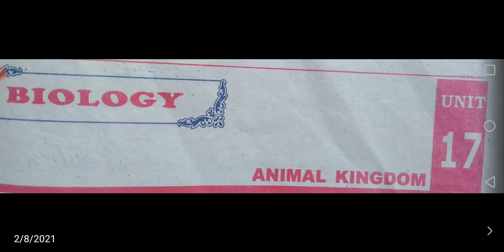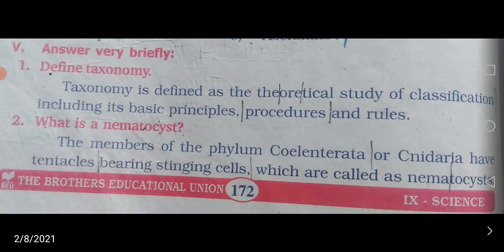Unit 17, animal kingdom, and Unit 18, organization of tissues. These two chapters are covered in the first midterm test. We will see chapter 17 animal kingdom book back exercise — 2 marks, as well as 4 marks and 7 marks — we will discuss now.